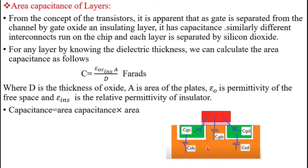When estimating the capacitance of any layer, we use the formula: Capacitance = Area Capacitance × Area. The area capacitance C_A = C/A = ε₀ × ε_INS / D. With respect to this formula, we estimate the area capacitance for different layers and technologies.